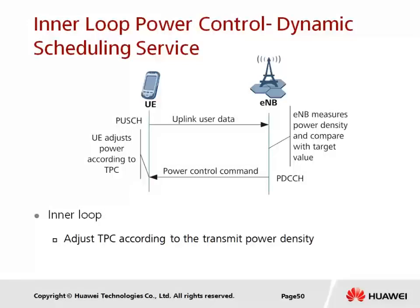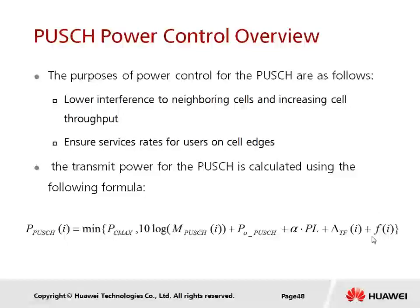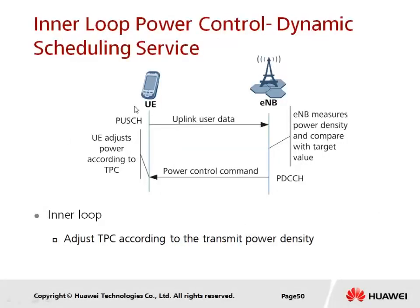The eNodeB decides the TPC value, which affects FI, using two mechanisms. The first is inner loop power control, used for services undergoing dynamic scheduling — meaning the UE is scheduled every one millisecond TTI. The eNodeB measures the uplink PUSCH power density, converts it to SINR, compares it with the target SINR, and decides the power control command TPC.